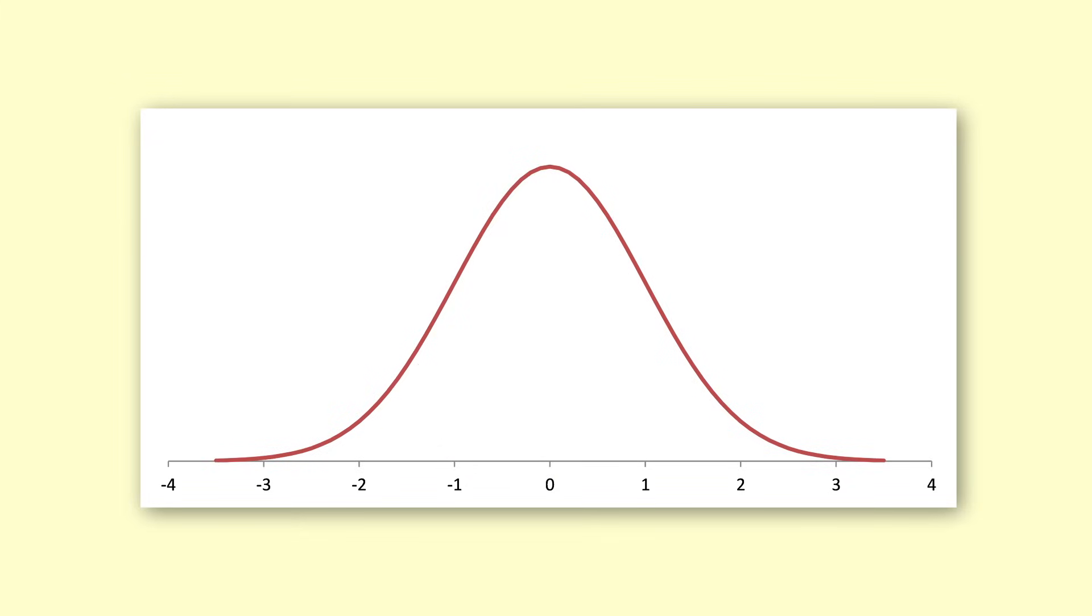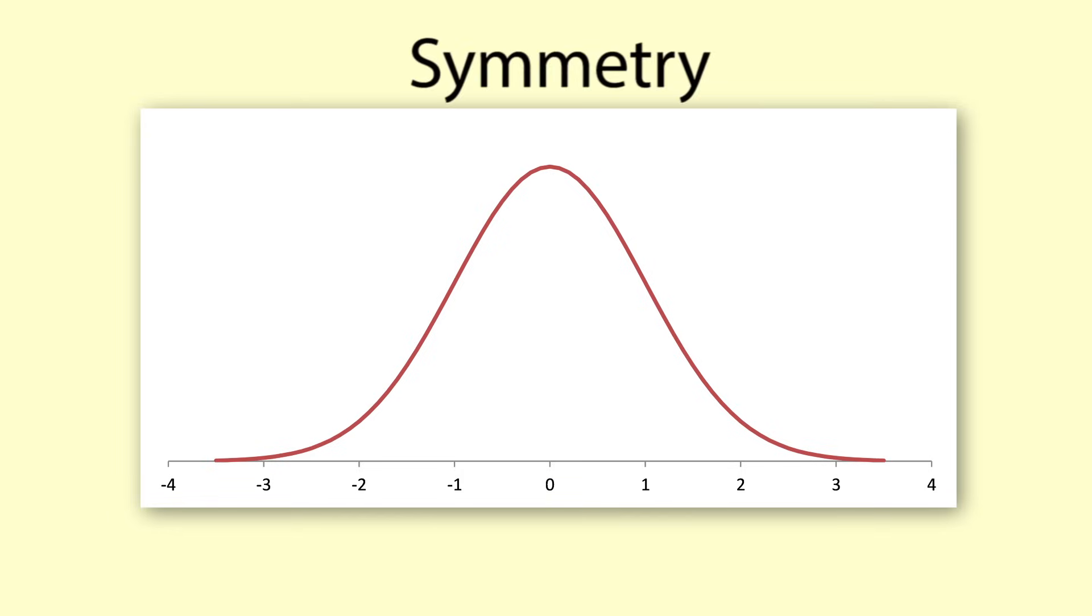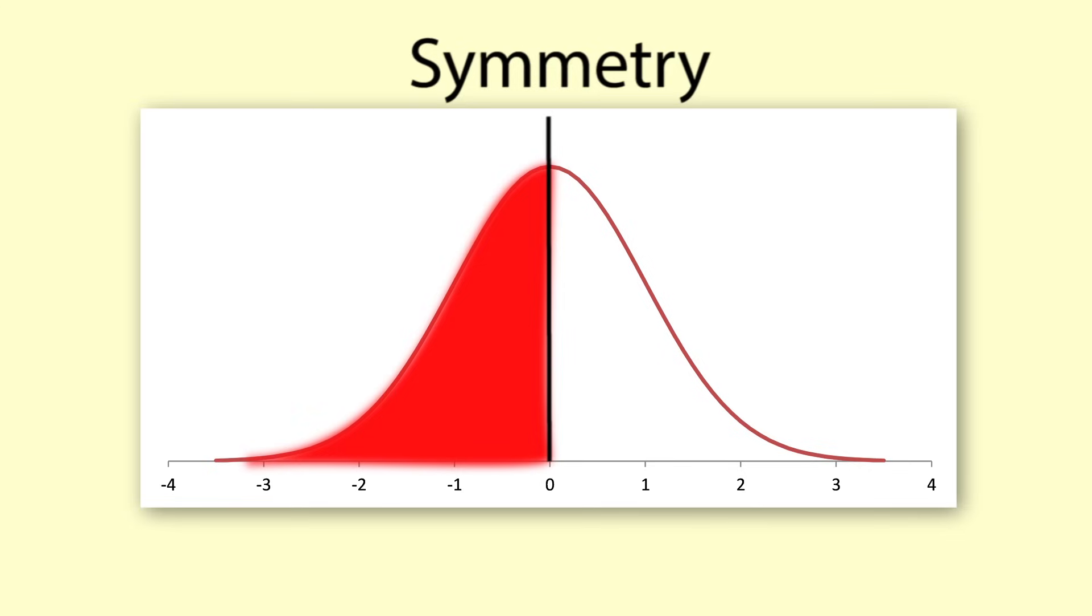The normal distribution has the following characteristics. Single Peak: Most data values occur near the mean, so that there is a single peak in the middle. Symmetry: Half of the data values measured occur above the mean and half occur below the mean, so that the distribution is symmetric.